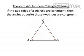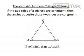Let's talk about Theorem 4-3, the Isosceles Triangle Theorem. It says that if two sides of a triangle are congruent, then the angles opposite those two sides are also congruent. So if segment AC is congruent to segment BC, then angle A is congruent to angle B.